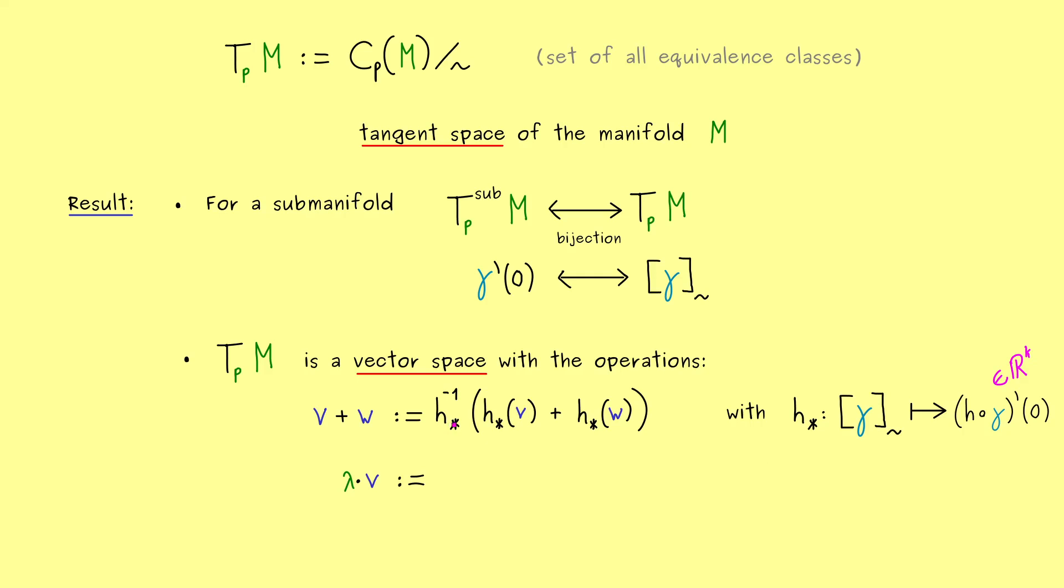So we have this derivative as always and now we can also show that this is a bijective map. Hence, after adding the two vectors in R^k, we can just make it backwards to T_pM again. So the short idea is, we go to the lower level, use the addition and then we go back. And now you just have to show that this addition on the left hand side is well defined. So you have to show it does not matter which chart h you choose.